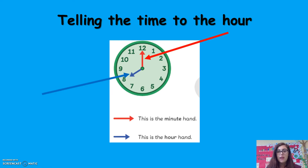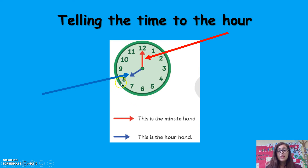When we tell the time to an hour, we look at our minute hand. Our minute hand will be pointing at 12, which means it is 0 minutes past the hour — or we usually say, o'clock. On this clock here, we can see that it is 0 minutes past 8, so it is 8 o'clock.